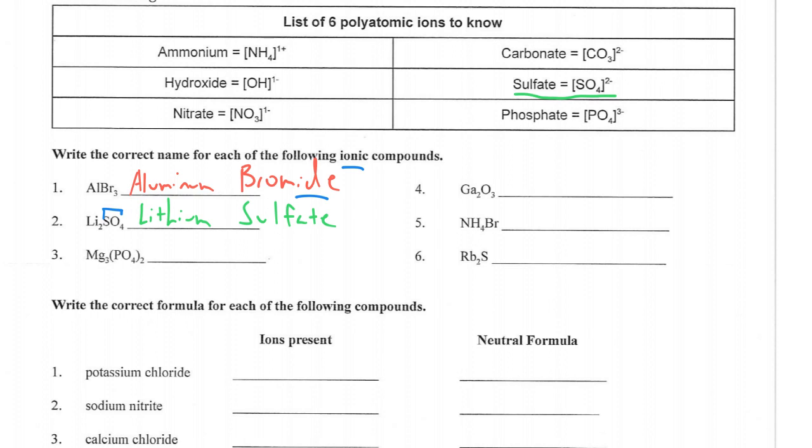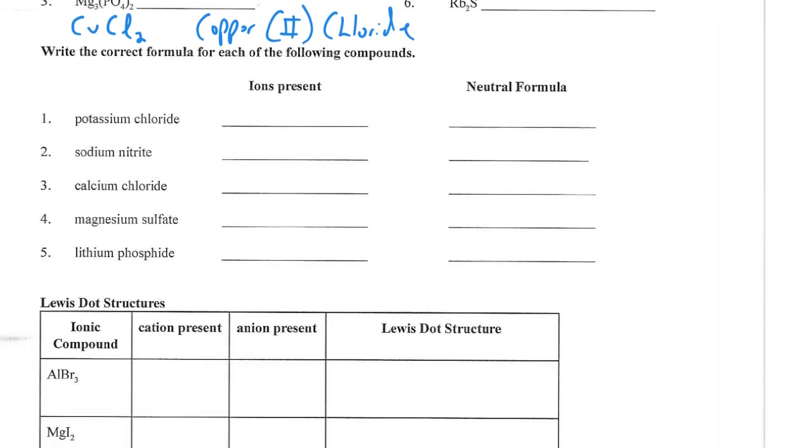I think you can get the rest of these. One thing that's not here is when we need to use Roman numerals. If we ever have a transition metal, like let's just come up with an example, something like copper. So CuCl2, this would be copper 2 chloride. Because chloride can receive one electron, so copper must have two valence electrons to make this whole thing balance. So be prepared for some potential Roman numeral questions.